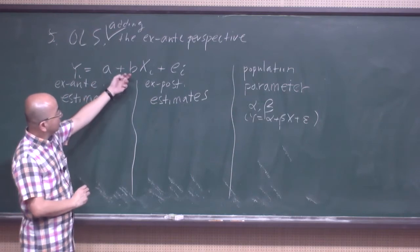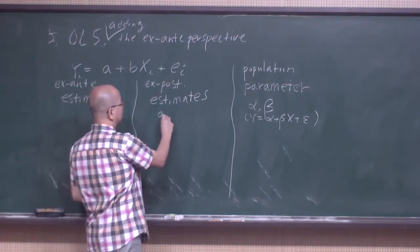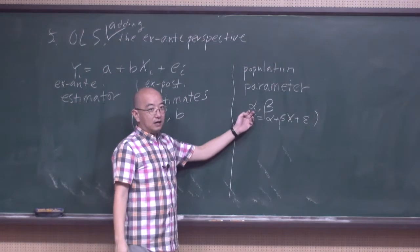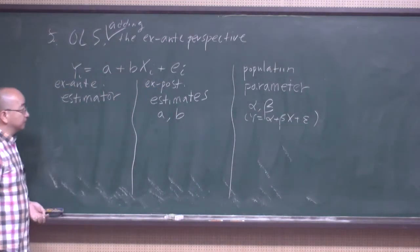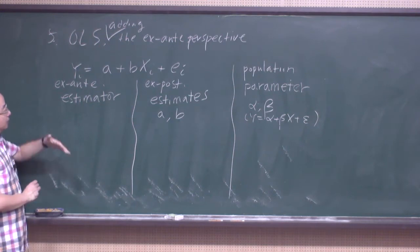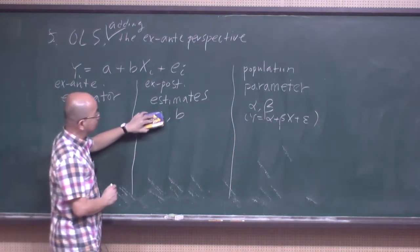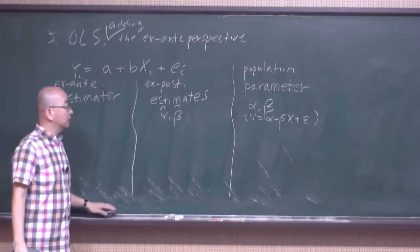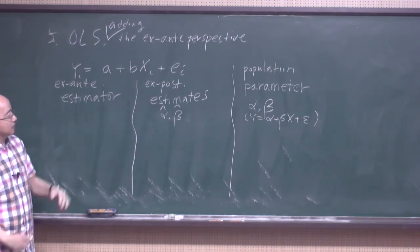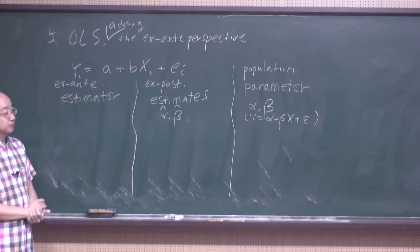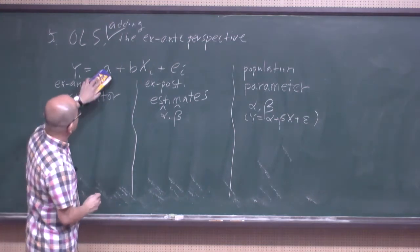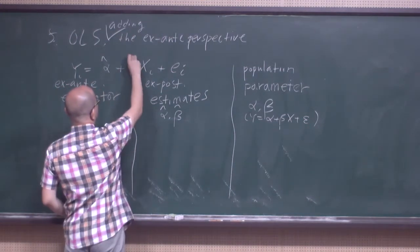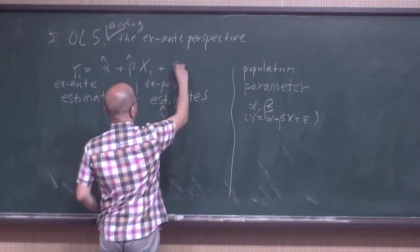Instead, we can calculate A and B from our sample, and we consider A and B as the estimates of alpha and beta that we cannot see. Continuing the convention used earlier, instead of A and B, let's call them alpha-hat and beta-hat, to emphasize that these are estimates of the parameters. So we may relabel: alpha-hat, beta-hat, and epsilon-hat.